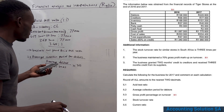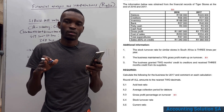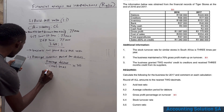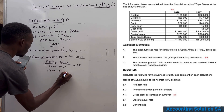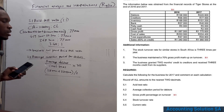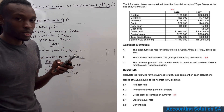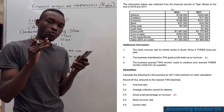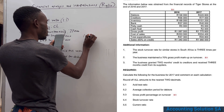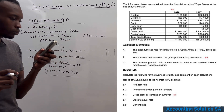Average debtors means adding last year's and this year's debtor balance and dividing by two. Last year's debtors were 158,000 and this year's are 220,800 — add these and divide by two. For credit sales, the given sales figure is multiplied by 60%, since 60% of sales are on credit, giving us the credit sales amount.